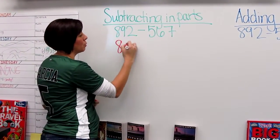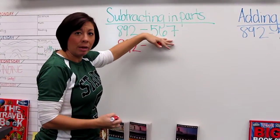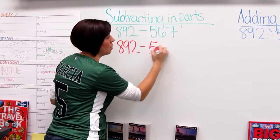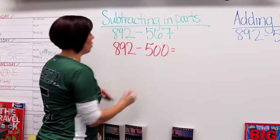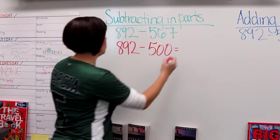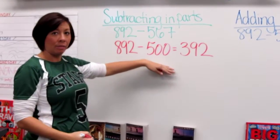For subtracting in parts, what I'm going to do is I'm going to start with 892 and then I will break 567 apart into different parts. So to start with, I will start by just taking the 500 out. 892 minus 500 would give me 392 and I've taken care of the hundreds.